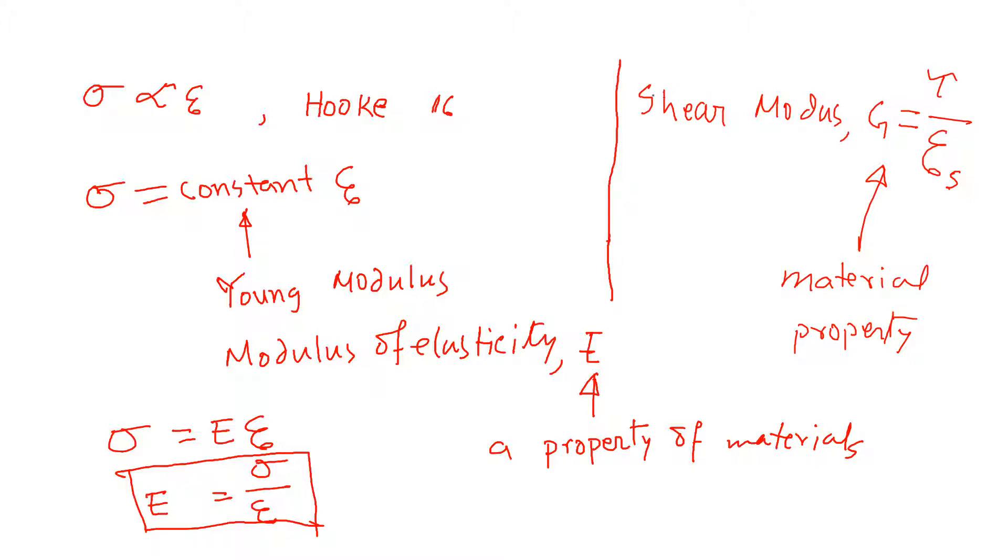So, for shear stress, we have a shear modulus, which is expressed by G. Shear modulus is defined by the shear stress as tau by the shear strain, gamma S. And this is also a material property. Can be found at the end of the book in tables.